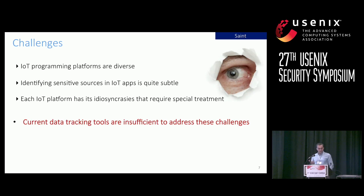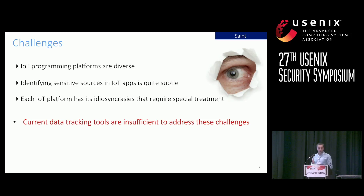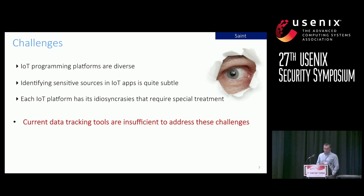Taint analysis, either statically or dynamically, has been applied to many different settings such as mobile apps. However, from our study of three IoT platforms, we found that IoT platforms possess a few unique characteristics and challenges for tracking information flow compared to mobile platforms. First, IoT programming platforms are diverse and each uses its own programming language, whereas Android has a well-defined intermediate representation and analysis can directly analyze the IR code using frameworks like Soot. Second, identifying sensitive sources in IoT is quite subtle because there are many devices and each has a different set of internal states which are sensitive. Lastly, each IoT programming platform has its own idiosyncrasies that pose challenges to taint tracking.